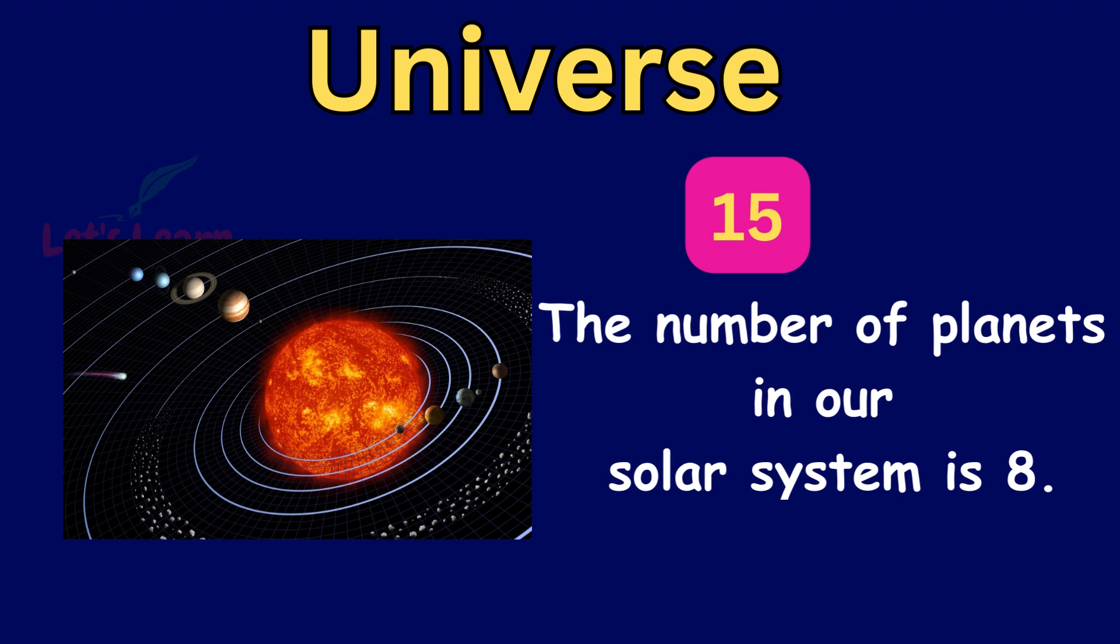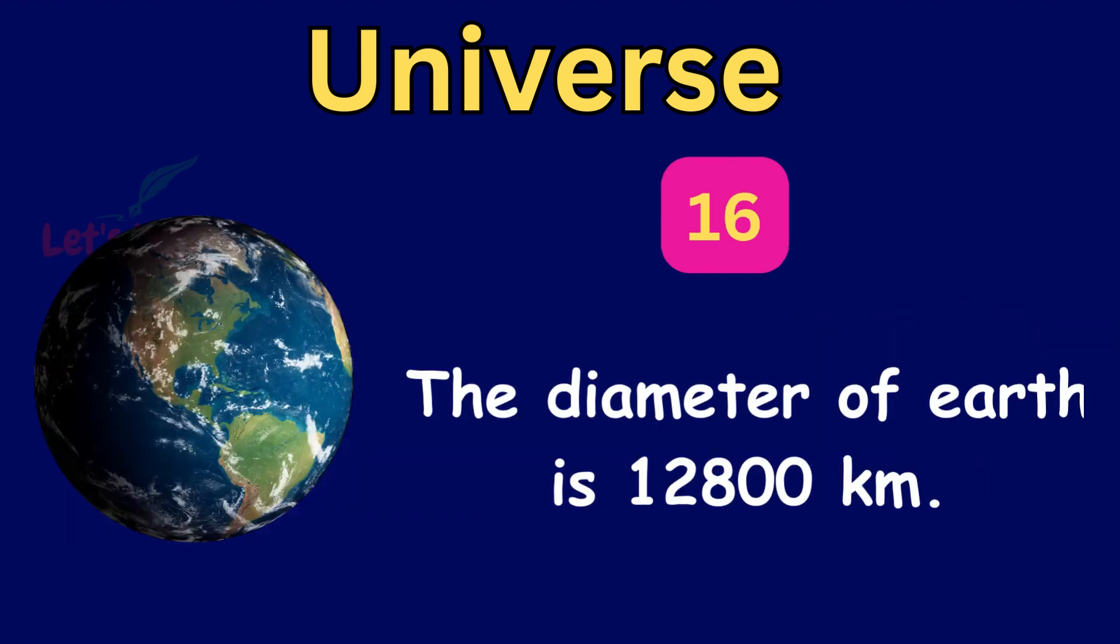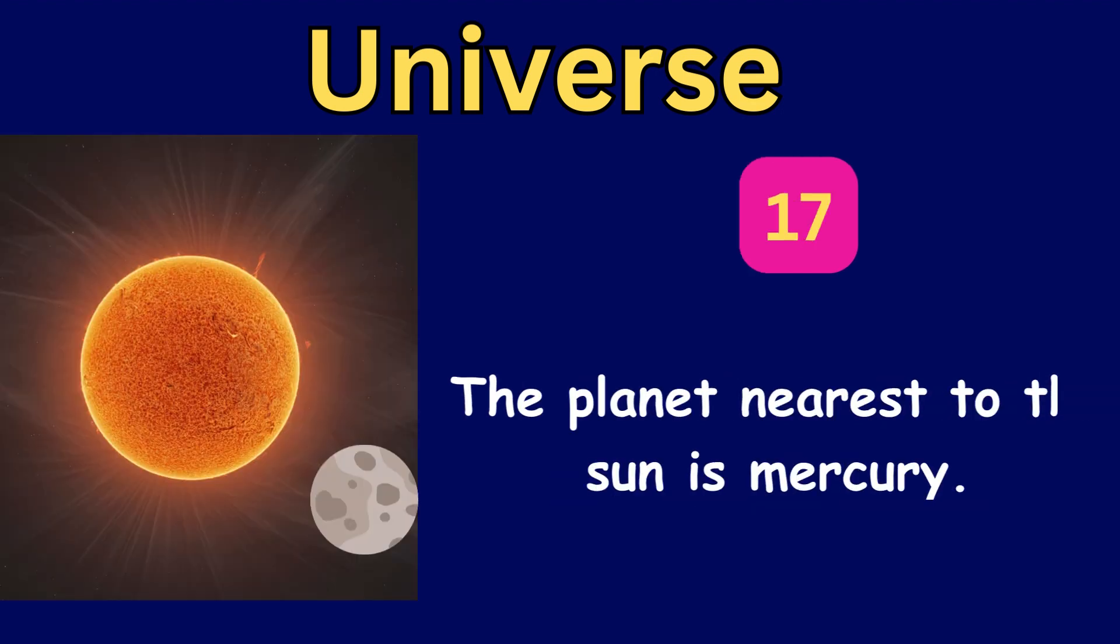The number of planets in our solar system is 8. The diameter of Earth is 12,800 km. The planet nearest to the Sun is Mercury.